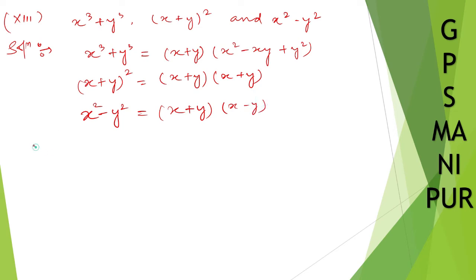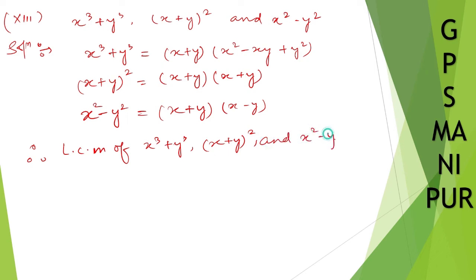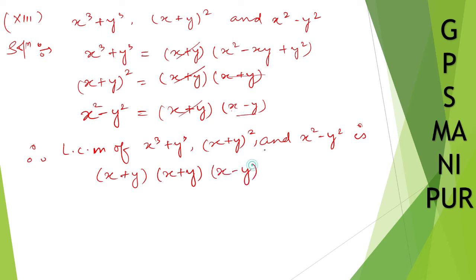So therefore, the LCM of x cube plus y cube, x plus y whole square, and x square minus y square. We take x plus y as common — write down x plus y. Next, x minus y — write down x minus y. And write down x square minus x y plus y square.